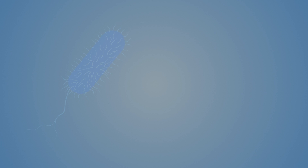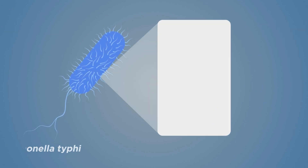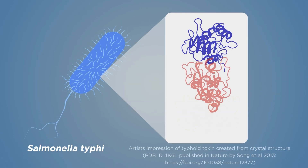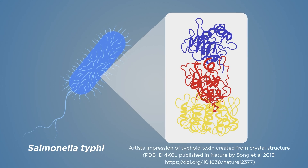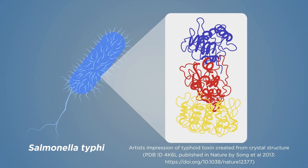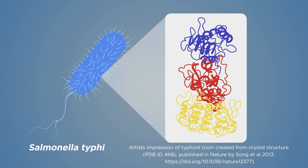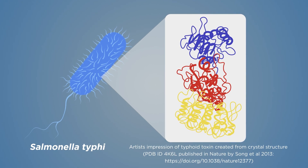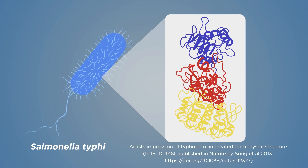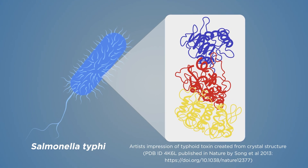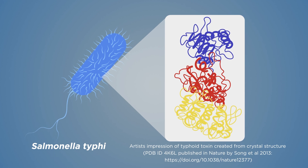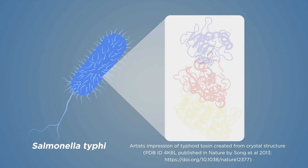Virulence molecules such as typhoid toxin enable Salmonella typhi to evade the immune system, thus causing disease. Understanding how these virulence molecules work is vital to combating typhoid.